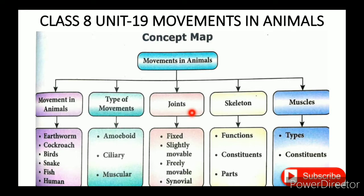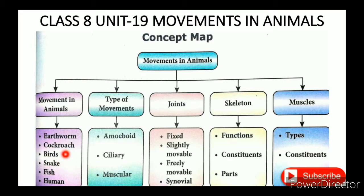The 3rd topic is joints, the 4th topic is skeleton, the 5th topic is muscles, and the 6th topic relates back to movement in animals. In the 2nd video, animals covered include cockroach and birds. Cockroach has 6 legs and 4 wings. Birds move by gliding and flapping. Other animals covered include snake, fish, and human. Snake movement involves slithering.